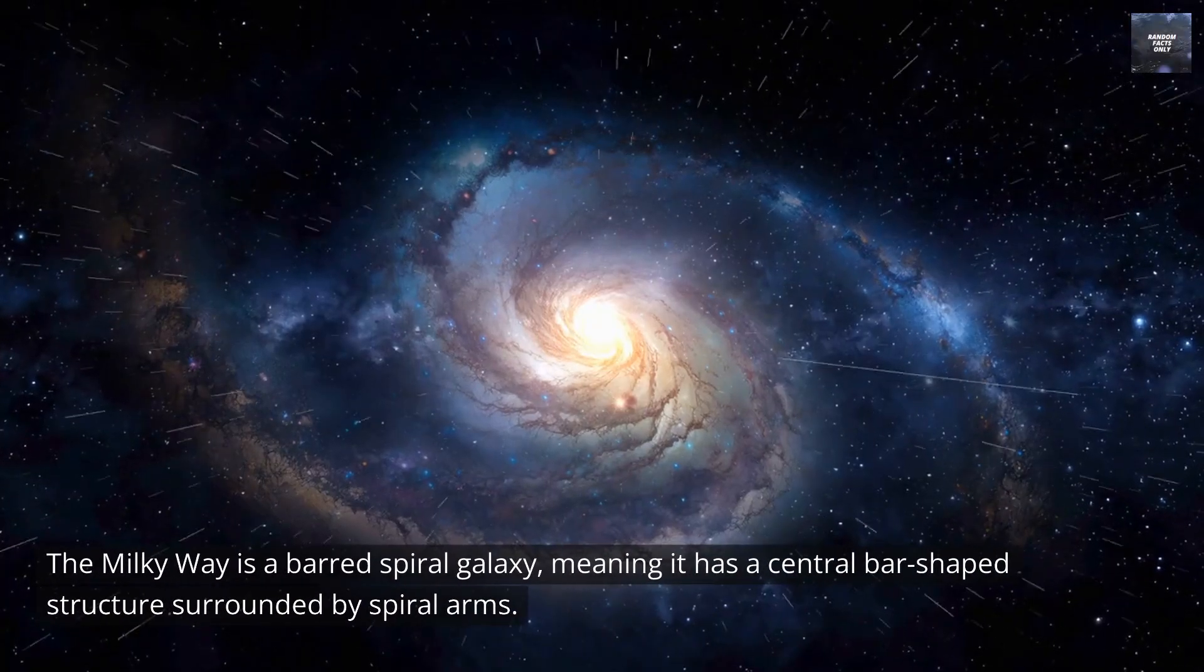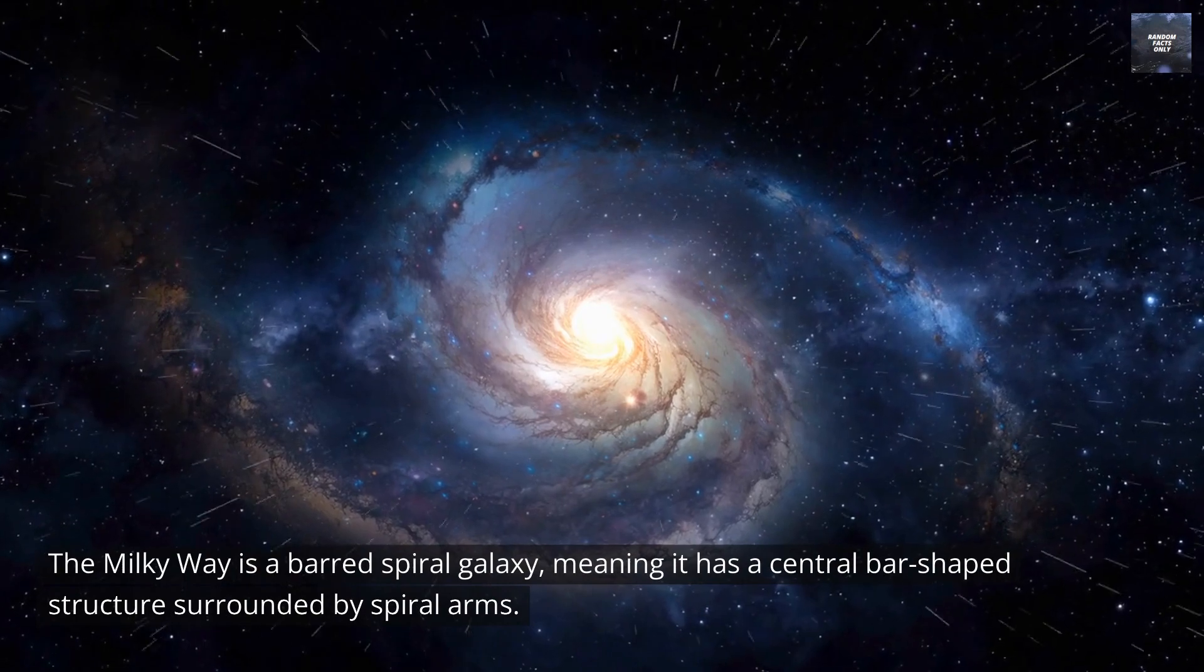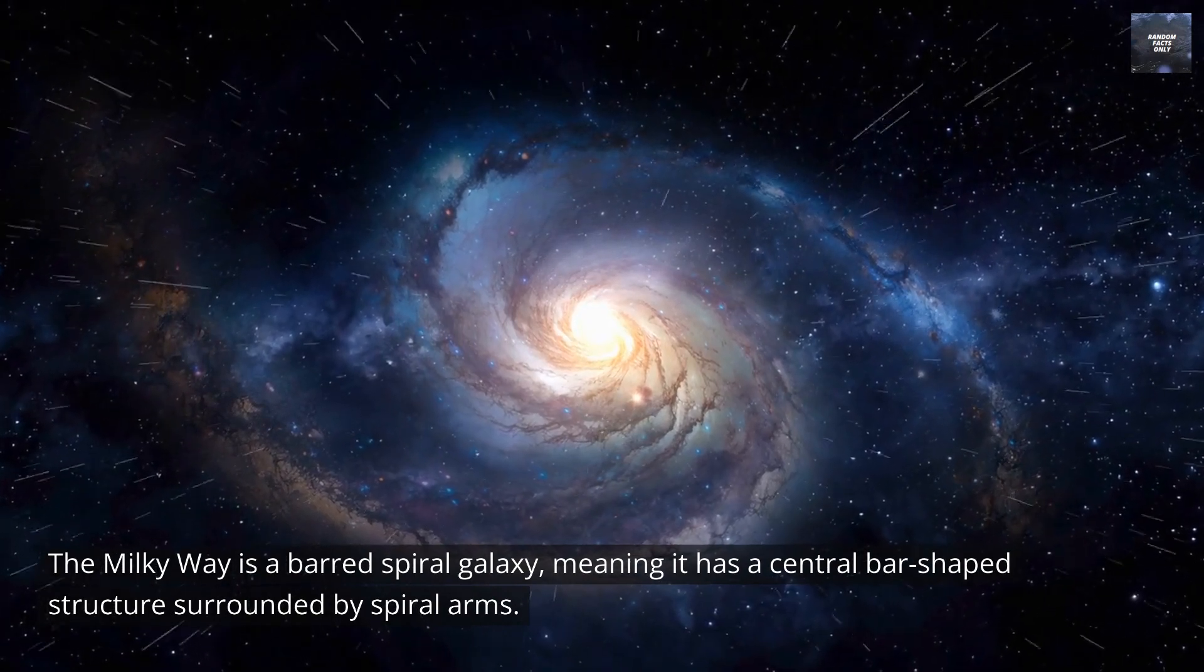The Milky Way is a barred spiral galaxy, meaning it has a central bar-shaped structure surrounded by spiral arms.